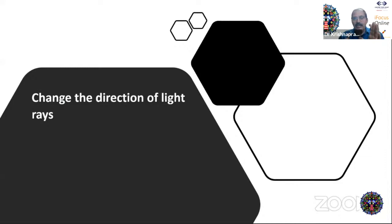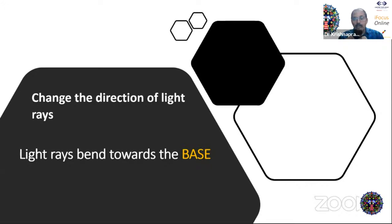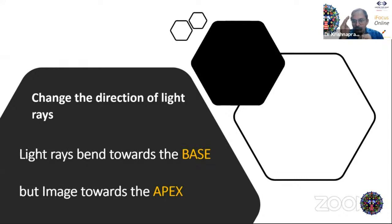Prisms are excellent devices we use so much in ophthalmology, and this is a very commonly asked question. Prism bars or loose prisms are kept on the viva table. They change the direction of light rays — light rays always bend towards the base. But the image that you see through the prism will always shift towards the apex.